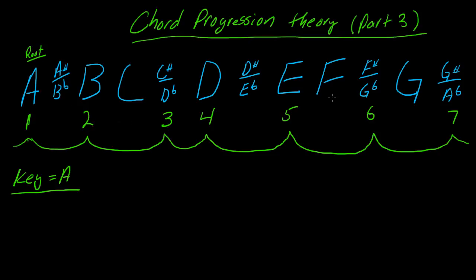F sharp is between 5 and 6, G sharp is between 6 and 7. Well, what about those notes or chords? Are those never used or what's going on here? The default chord progression theory doesn't include those.